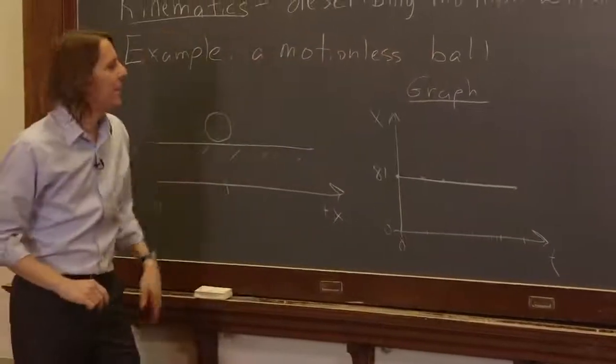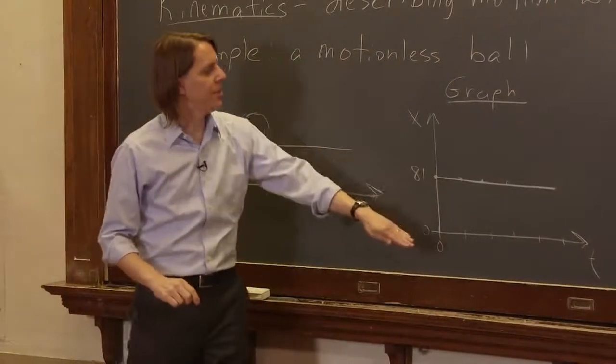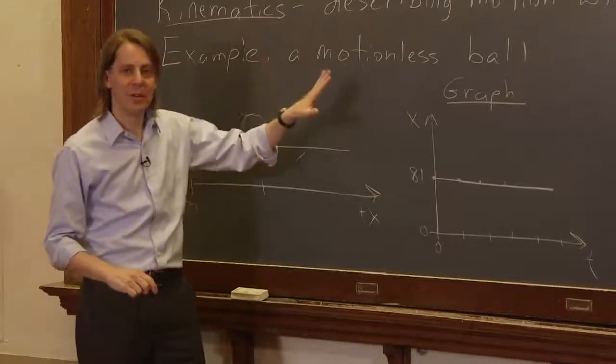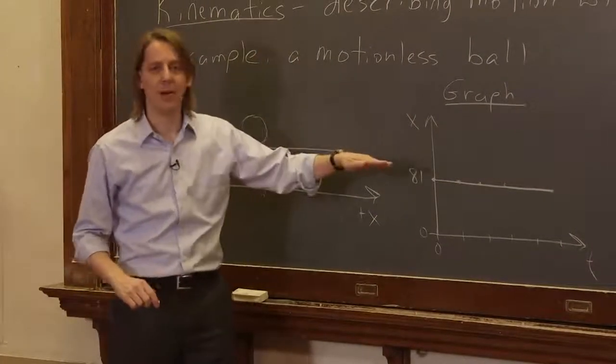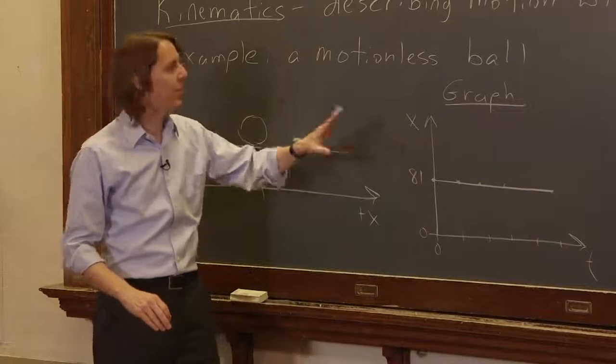Just a line. So there is your first position time graph. It's for something that's not moving. And it's simply a flat line. So that's the graph.